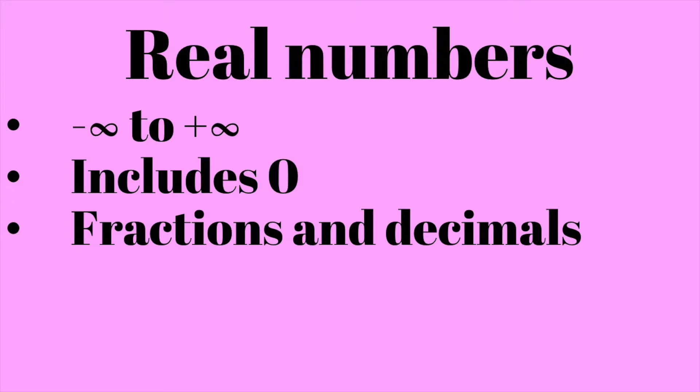Today's topic is different types of numbers. This might not seem super important, but having a base knowledge of the different types of numbers will definitely help you out when you're taking the test. The GRE will not have all types of numbers — you won't have imaginary numbers, for example. The first type is real numbers. These include all negative, positive, and zero numbers, including fractions and decimals. Anything possibly between negative infinity and infinity is a real number.